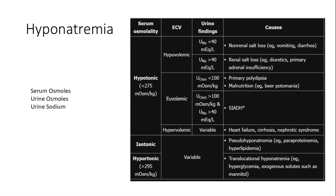We then check volume status. If hypervolemic, this is due to one of the 'oses': cardiosis, cirrhosis, or nephrosis. If euvolemic, we move to check urine osmoles and urine sodium. If urine osmoles are less than 100, it is due to primary polydipsia or malnutrition.